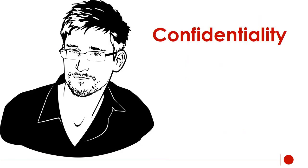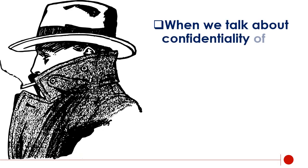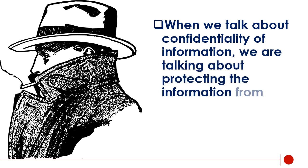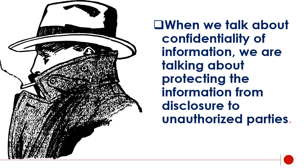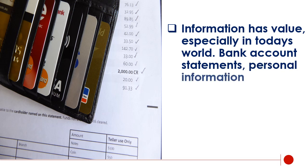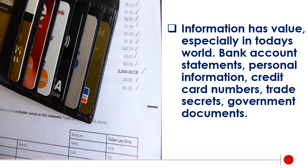Confidentiality. When we talk about confidentiality of information, we are talking about protecting the information from disclosure to unauthorized parties. Information has value, especially in today's world — bank account statements, personal information, credit card numbers, trade secrets, government documents. Everyone has information they wish to keep a secret, and protecting such information is a very major part of information security.